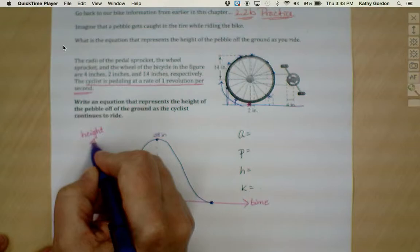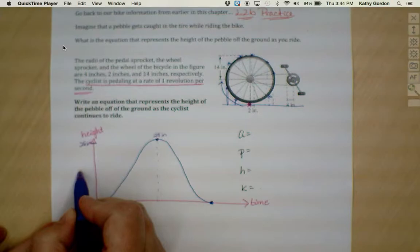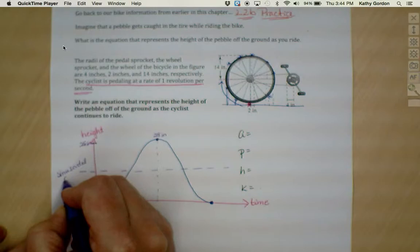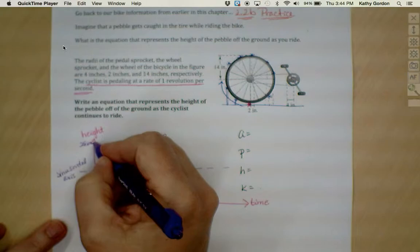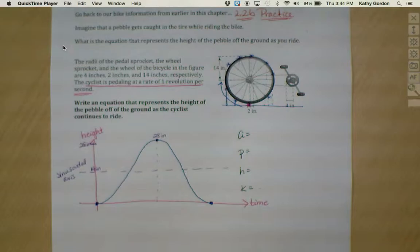If I'm rotating around this bike wheel and my bike wheel has a radius of 14 inches, then it would make sense my maximum distance away would be 28. Right here we're at 28 inches. Let's see if I can clear this up just a little bit. There you go. Hopefully that will make it easier to see.